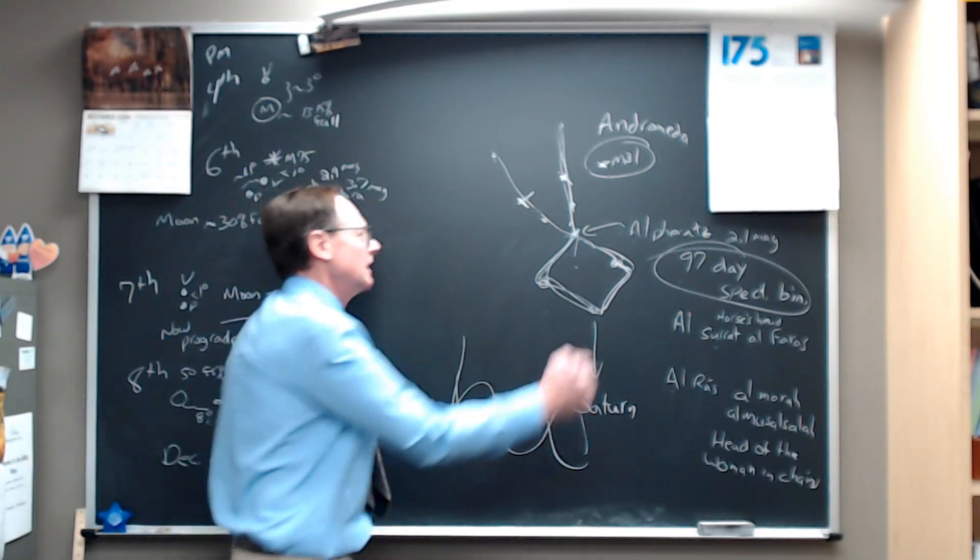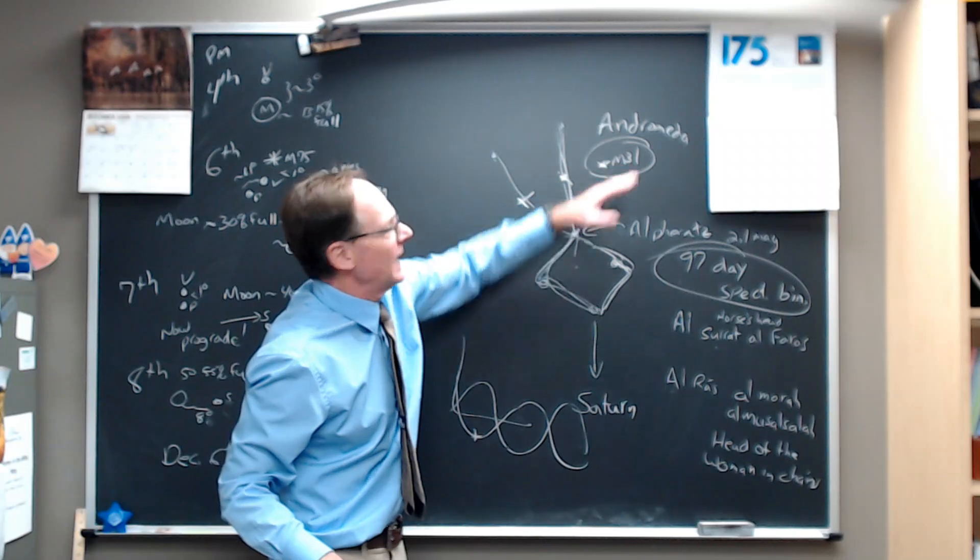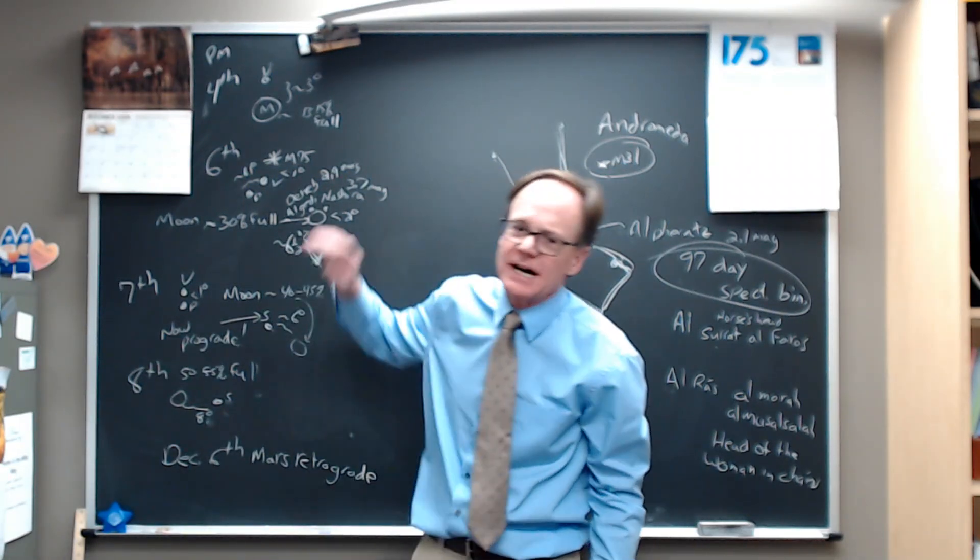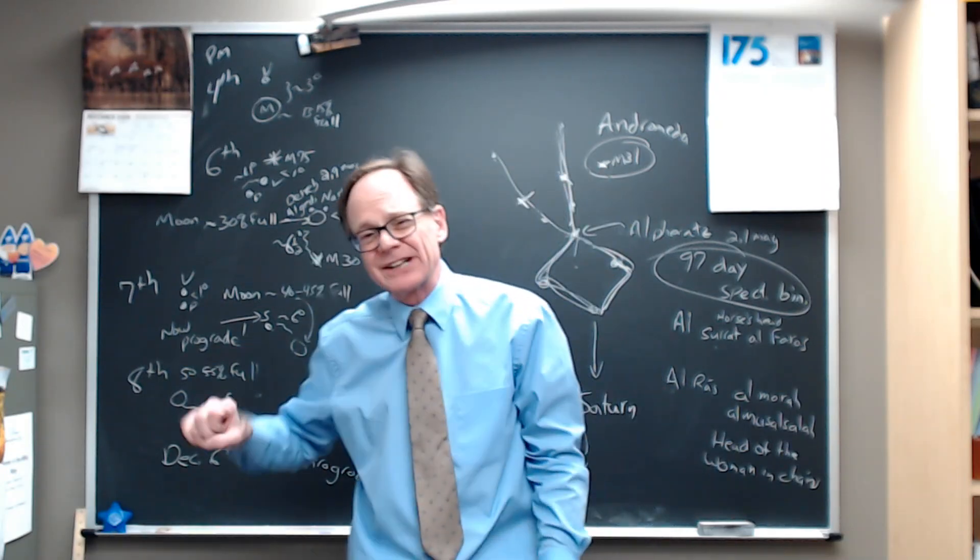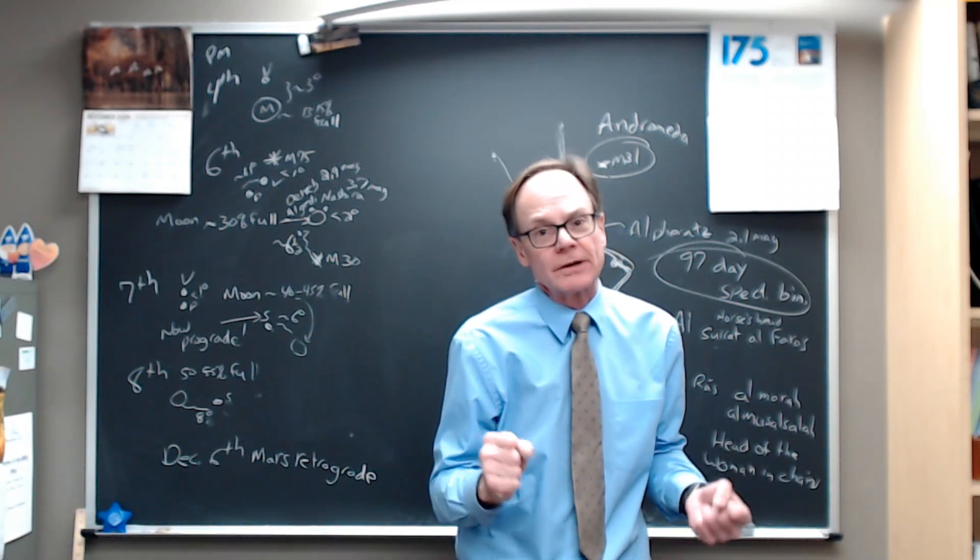This is what we got for you. Go and enjoy the Great Square of Pegasus. Check out Alpheratz. Check out M31. And be sure to check out Venus in the evening sky and Saturn and the moon passing through there. We got great stuff this week. As always, everybody, thanks for watching and we hope you have a great week ahead.